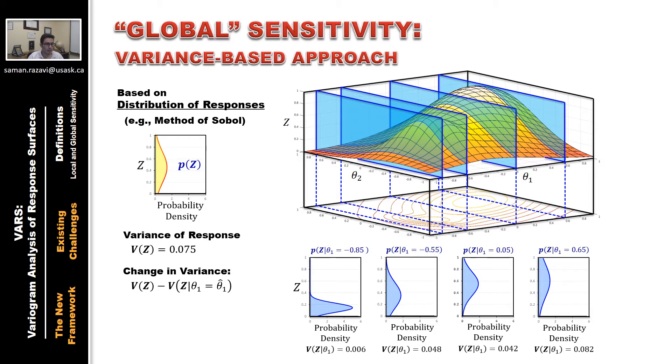But coming back to the idea of global sensitivity, what we can do, we can average the impact or change in variance for different values of theta1. By doing so, we take expectations in that equation, and then what we calculate is the main effect of theta1, which is the average impact of theta1 on the uncertainty in model response.